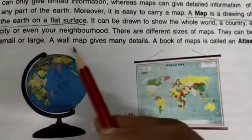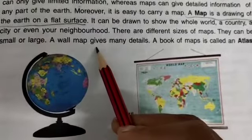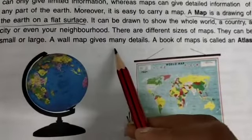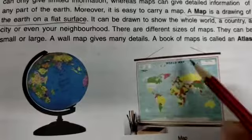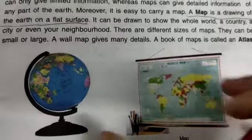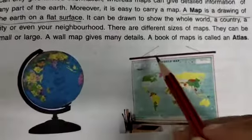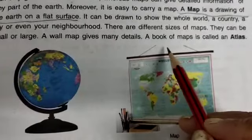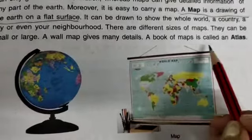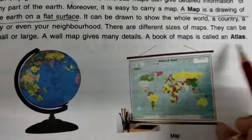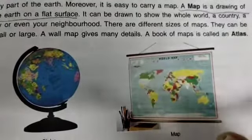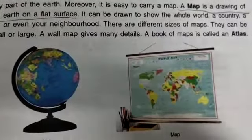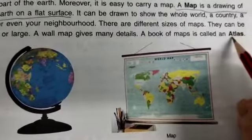A wall map gives many details. A book of maps is called an atlas.